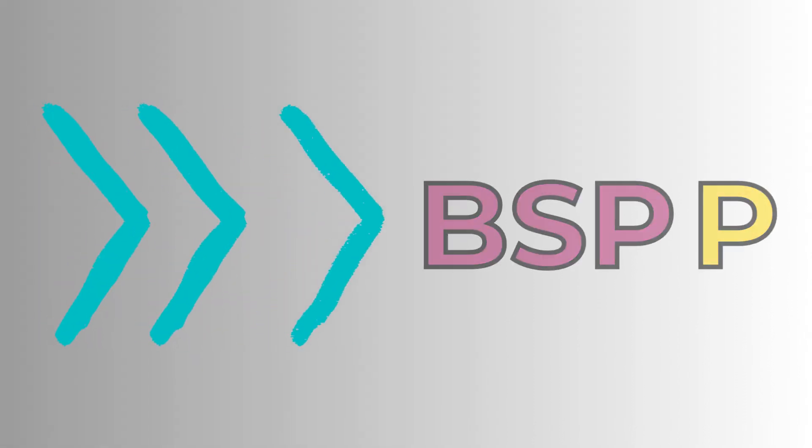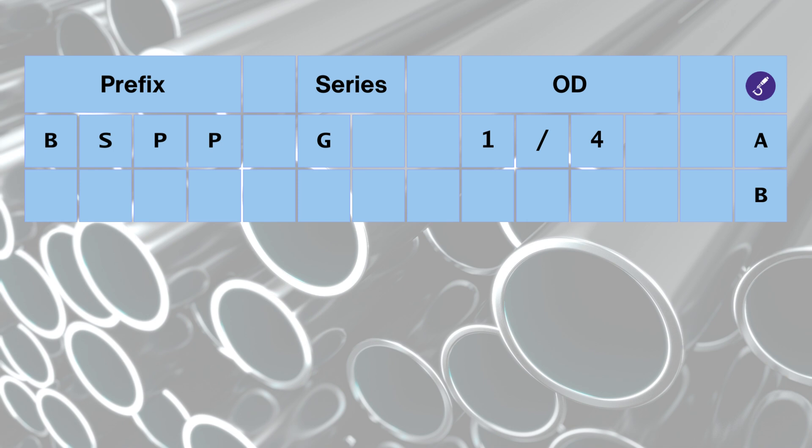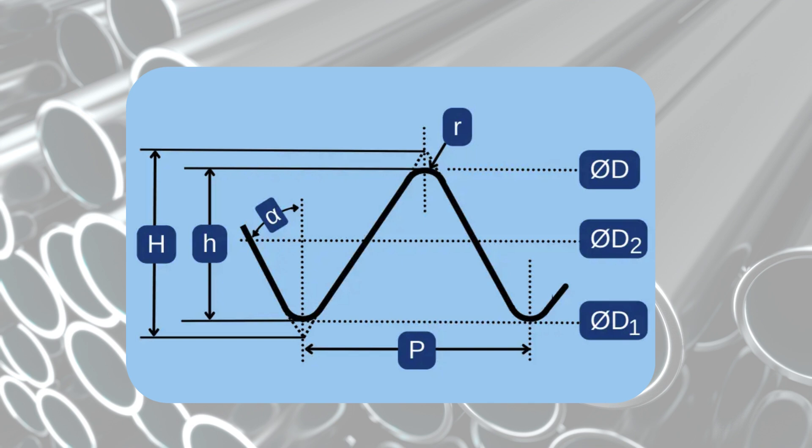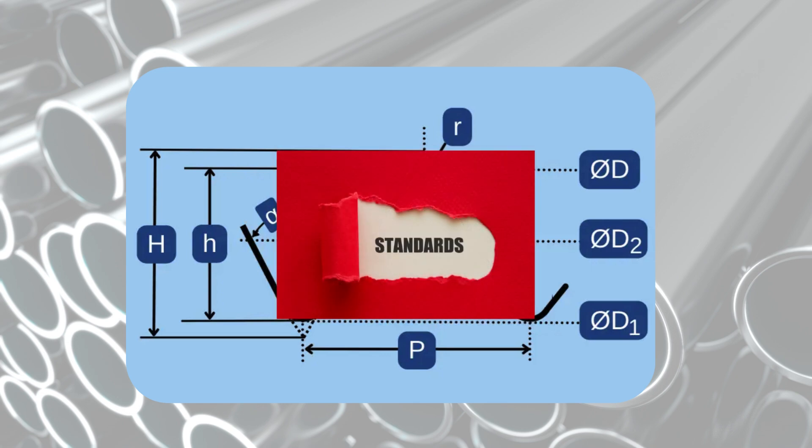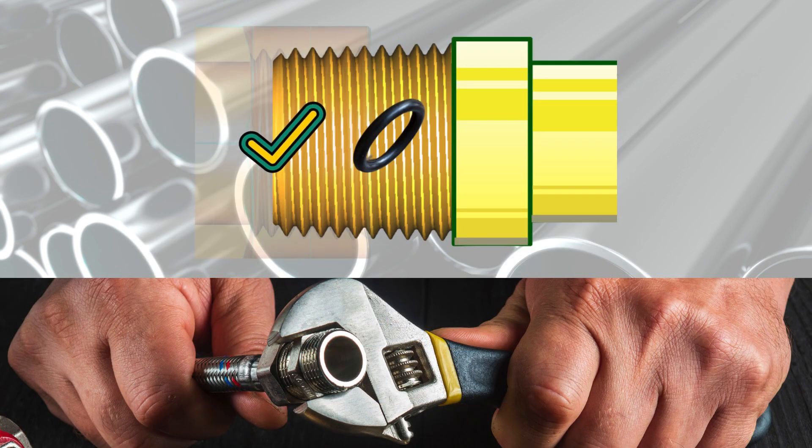Now let's move on to the BSPP family of parallel threads. BSPP has only the G series and is sometimes nicknamed G threads. Since it's a parallel thread, its parameters and inspection techniques are the same as for standard inch and metric threads. In this family, an O-ring is mandatory to form a seal.